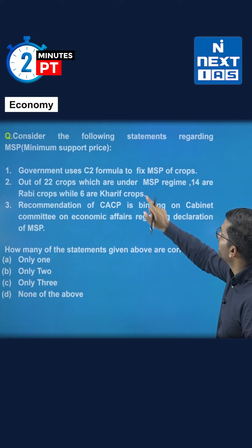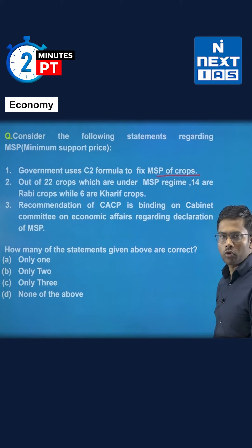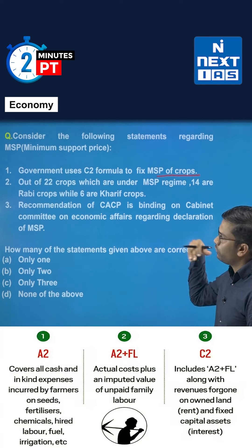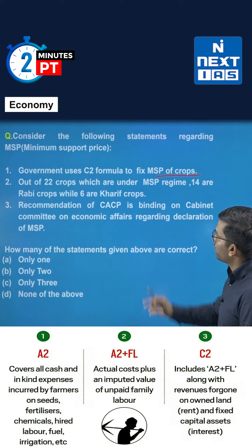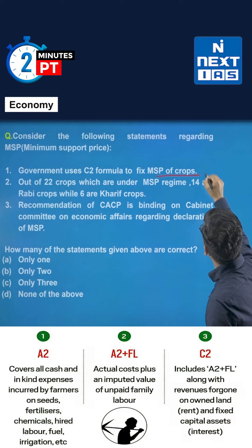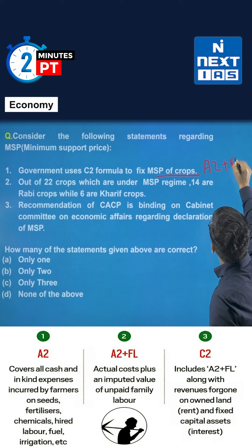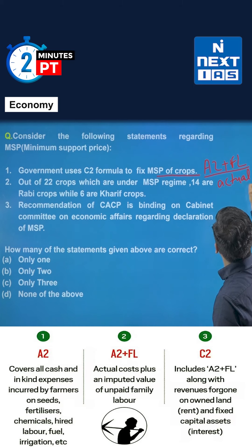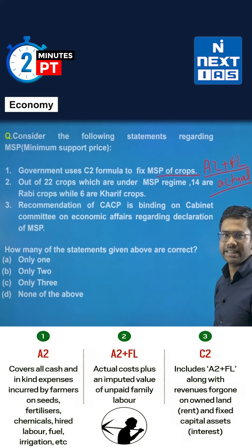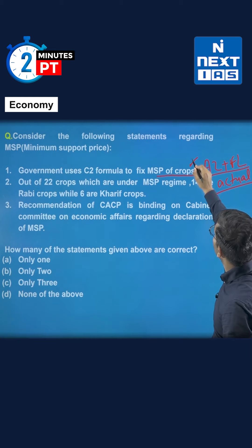Let us see the first statement — it says that the government uses the C2 formula to fix the MSP of crops. Which formula is used for calculating the cost of production has been in controversy. The government basically uses the A2 plus FL formula. Here A stands for 'actual' and in C2, C stands for 'comprehensive.' So this statement becomes false.